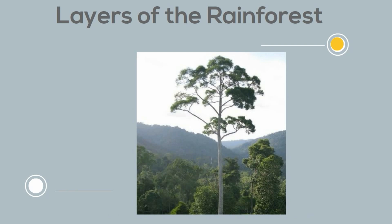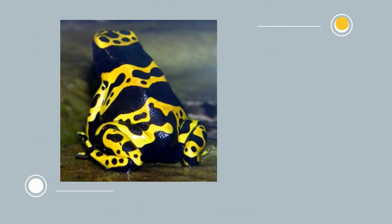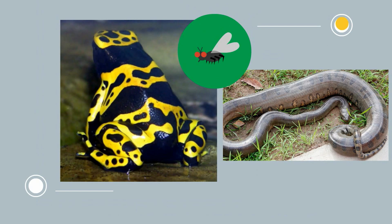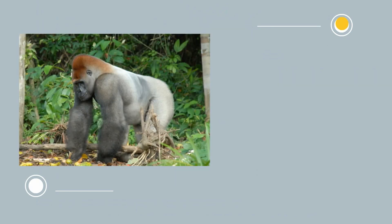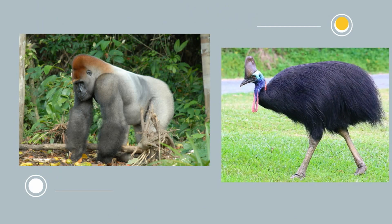There is a huge variety of plants and animals found in the rainforest and many insects. A couple examples include colorful frogs, big snakes, apes and gorillas, this weird bird called the cassowary, and many more.